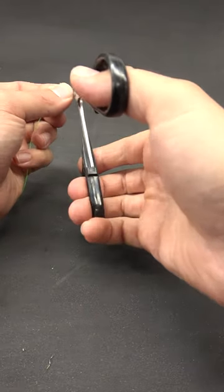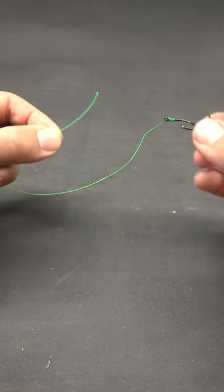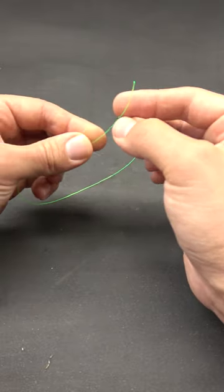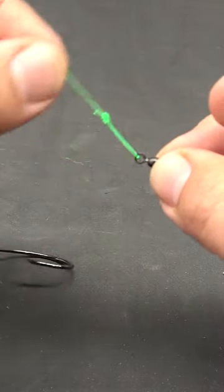From here we can cut our leader to rough length, 12 to 16 inches is a good starting point. Now take the free end of your leader and attach your swivel. I like the figure 8 knot to form a loop, and that just gives me a little extra movement in the water.